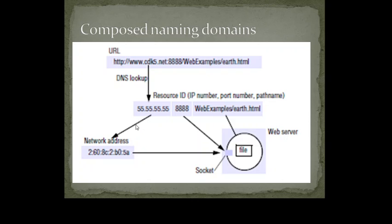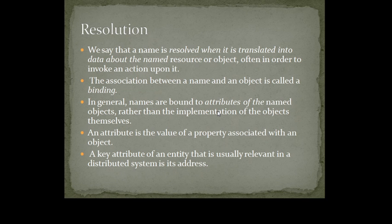So what happens is: with your IP address, you can recognize a host. However, if you want to reach a particular resource, you will need some more information such as a port number and a more specific path. Such things are possible in naming.